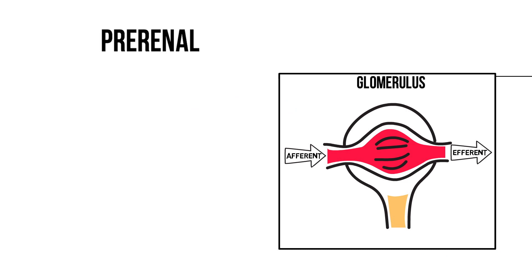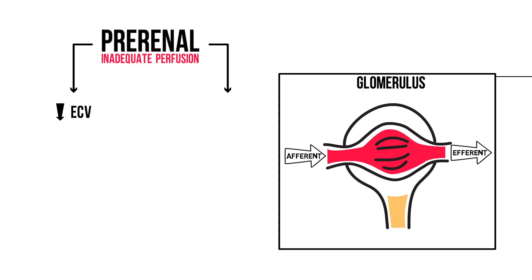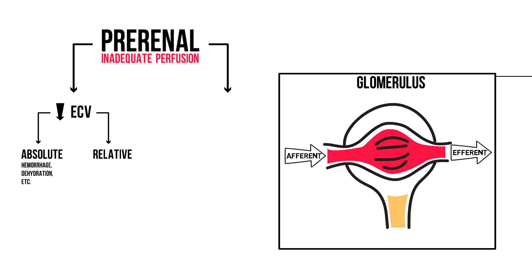So how to diagnose pre-renal from non-pre-renal causes? The patient's history will help you most, as it's usually a combination of dehydration and meds. The easiest way to remember the causes for inadequate renal perfusion is to divide them into two groups. The first is diminished effective circulating volume, which can be subdivided into an absolute and a relative deficit. An absolute deficit means there isn't enough blood in the body — hemorrhage or dehydration, etc. A relative deficit means the blood isn't within the vessels, as in congestive heart failure, decompensated liver cirrhosis, or sepsis which causes capillary leak.